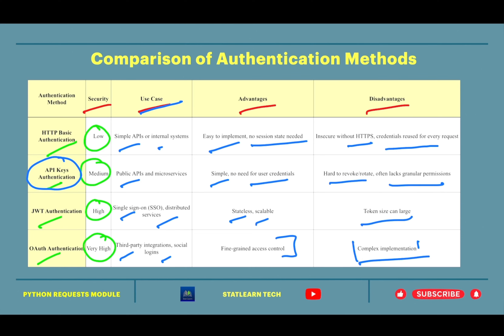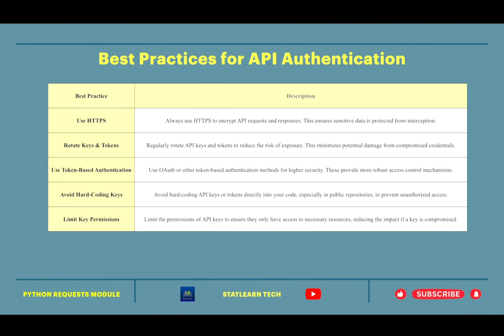Let us talk about best practices for API authentication. Always use HTTPS. Rotate your keys and tokens periodically. If possible, use token-based authentication such as OAuth or JWT. Avoid hard-coding keys or tokens directly in your code. When issuing tokens to users, limit the permissions in that token — you do not want a single token to have all permissions for your API.